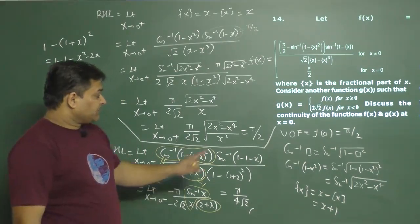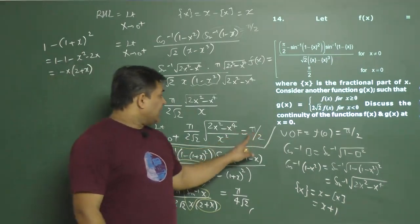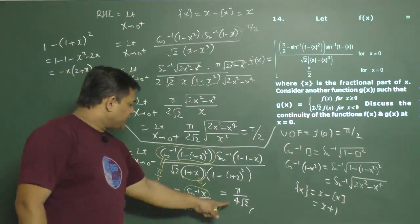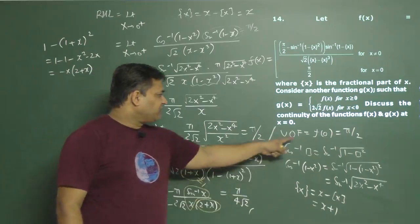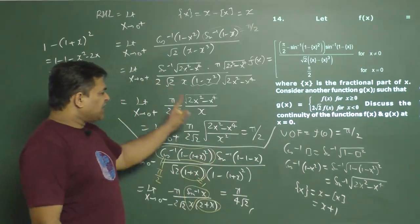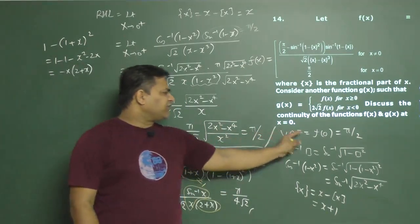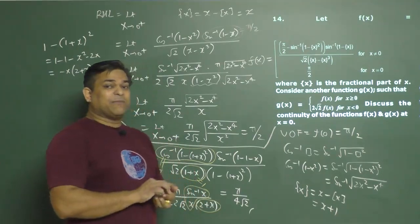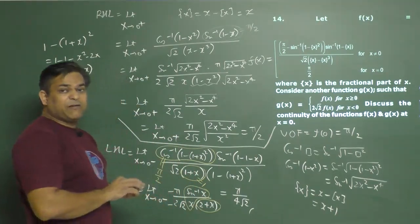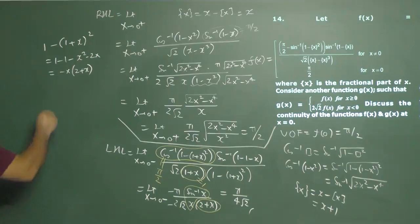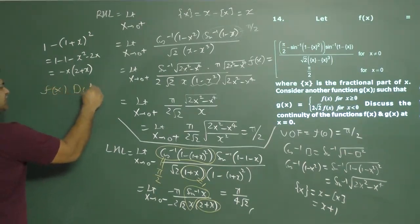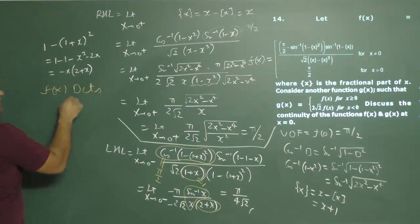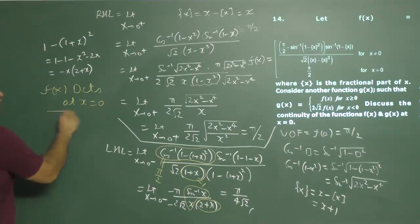So we have: right-hand limit = π/2, value of function = π/2, but left-hand limit = π/(4√2), which is not equal to the right-hand limit. Therefore we must conclude that f(x) is discontinuous at x = 0.